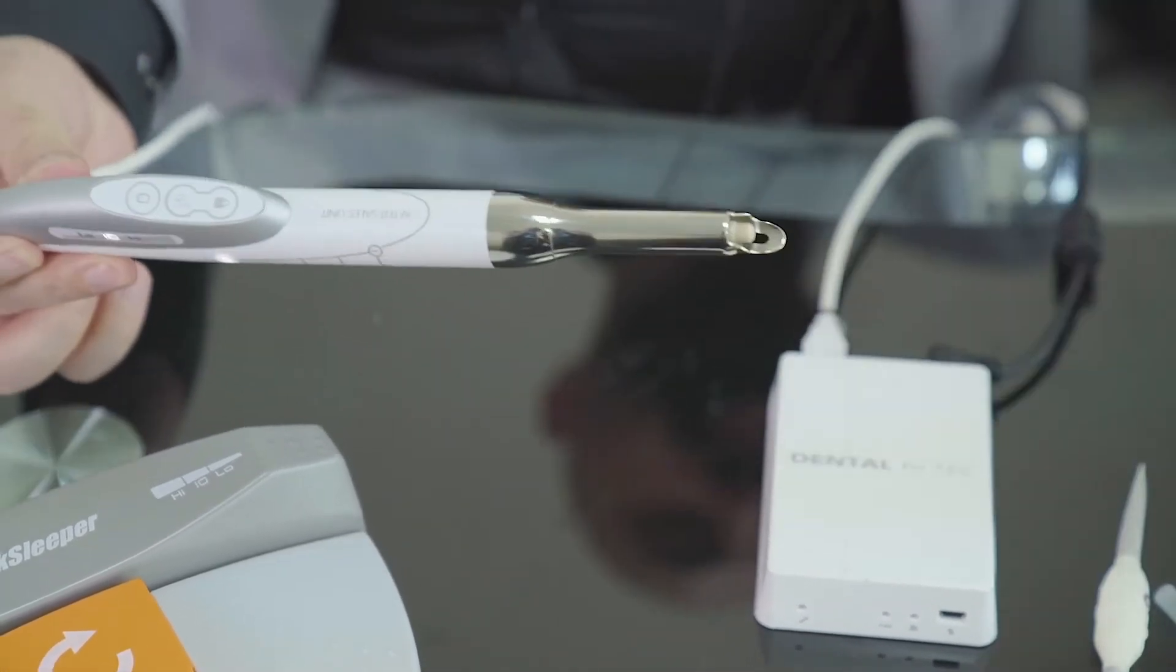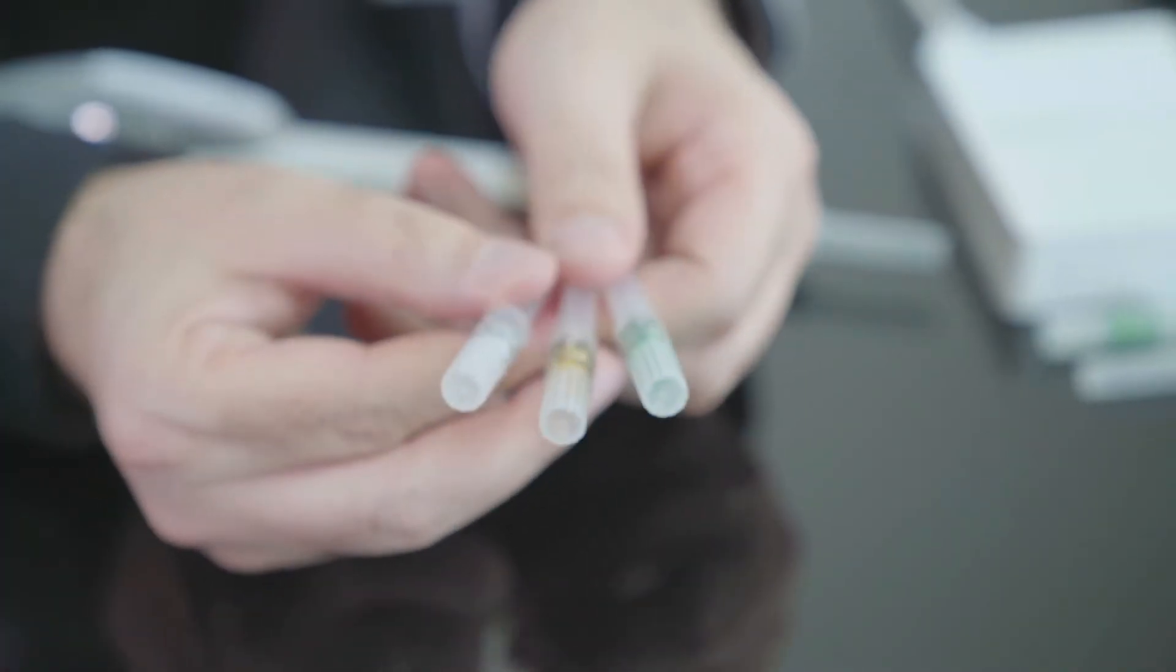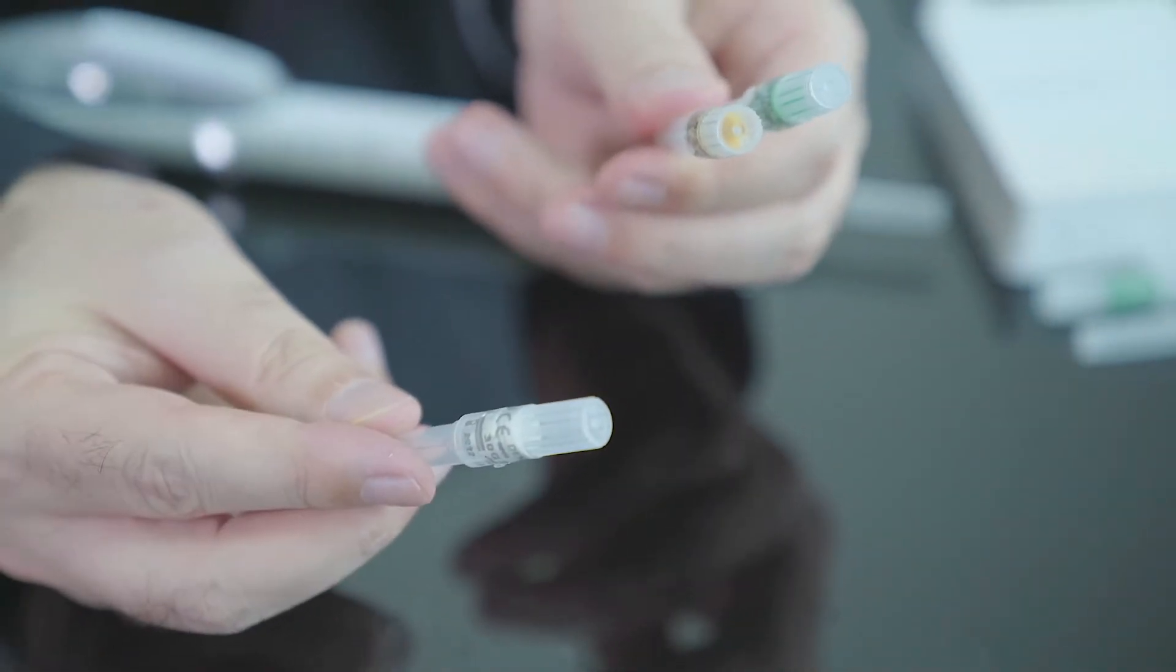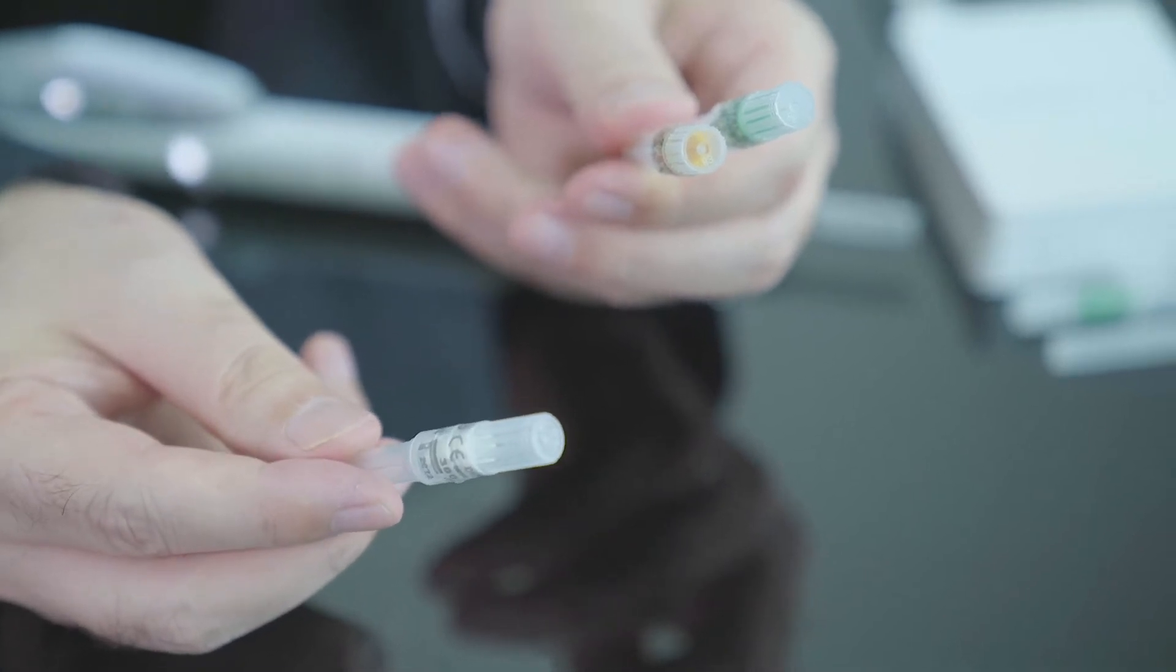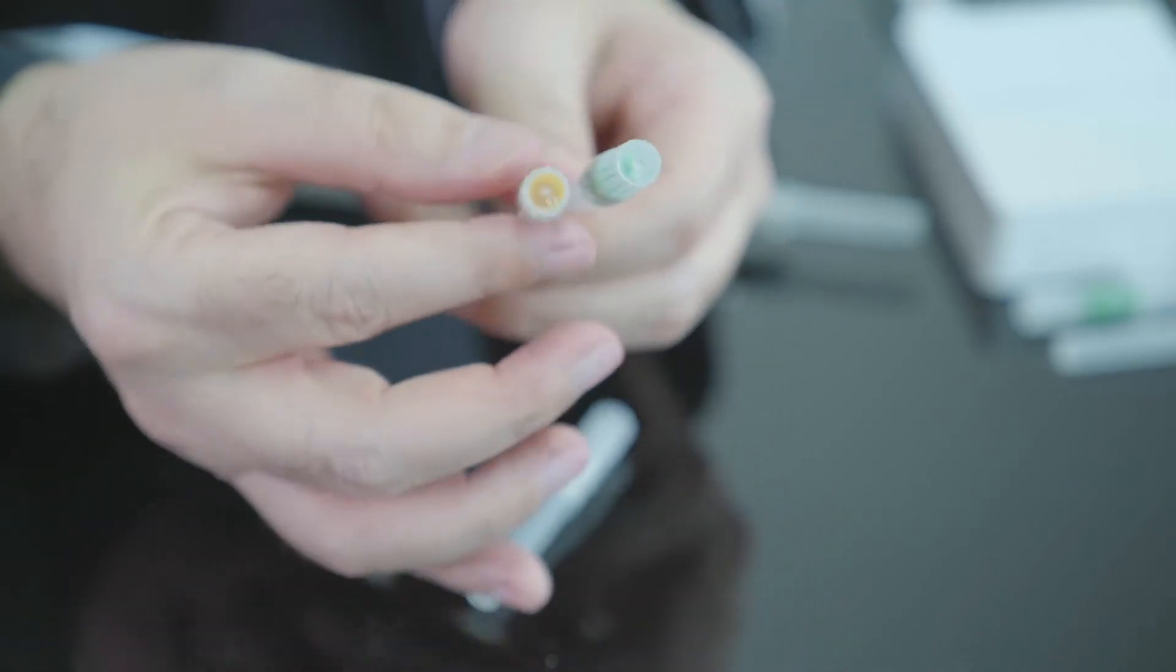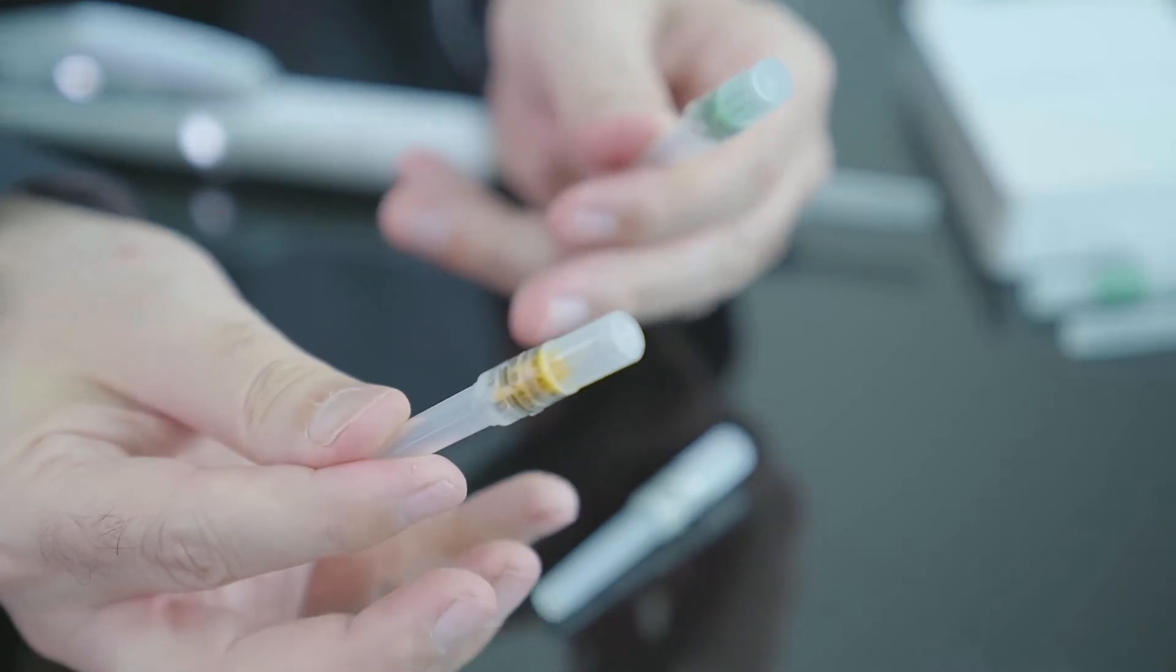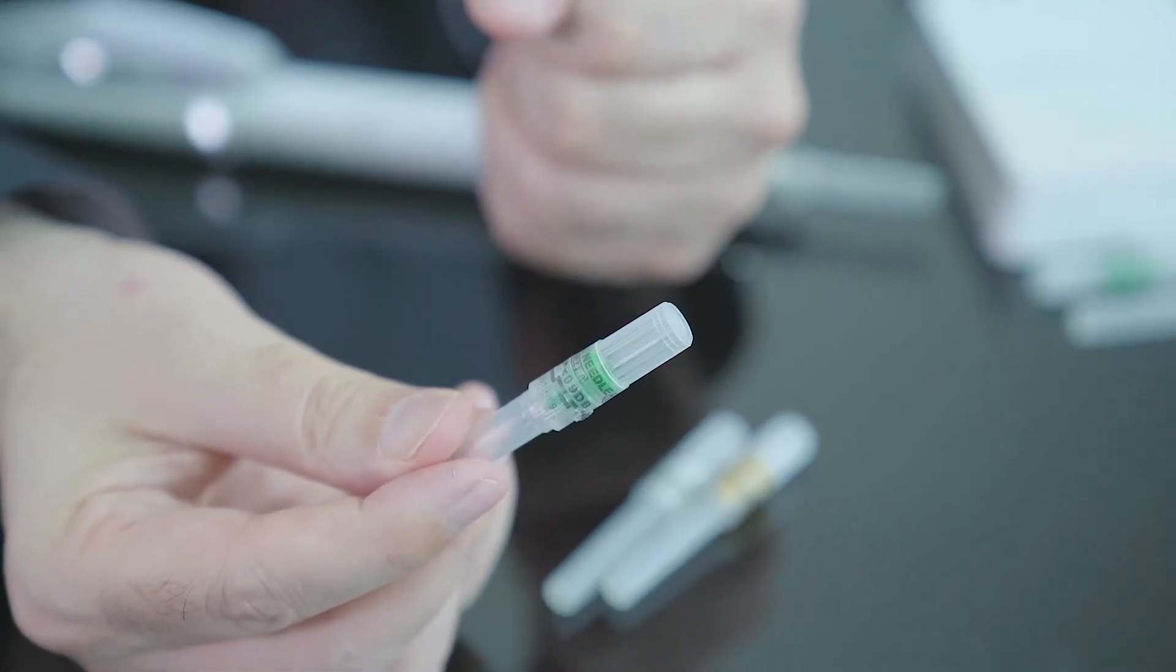Once it's done, now I will fix my needle over the handpiece. By the way, needles have three colors. The white one is the normal one, to do all anesthesia techniques plus intraosseous in the soft bone. The yellow one is a little thicker for doing intraosseous in the dense bone, mainly in the mandible, in the lower jaw. And the green one is used mainly for children.